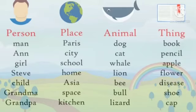Animal includes: dog, cat, whale, lion, bee, bull, lizard. All these are names of animals. And here we have the names of things.